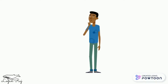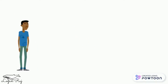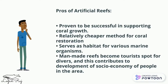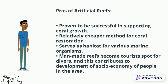Let us look into the use of artificial reef structures. Artificial reefs are proven to be successful in supporting coral growth. Besides that, it is a relatively cheaper method for coral restoration and it creates room for creativity in creating the substrate. As an example, ships and old car skeletons are sunken into the ocean to serve as substrate for reef structures. The artificial structure also serves as habitat for various marine organisms. Moreover, these man-made reefs become dive spots for divers, and this contributes to the development of the socio-economy of the people in the area.